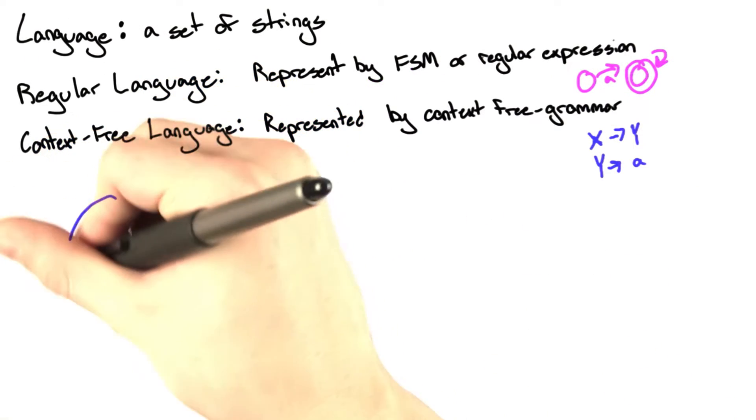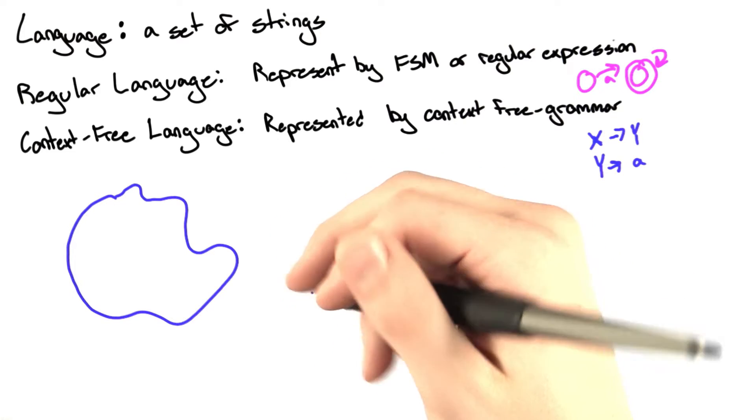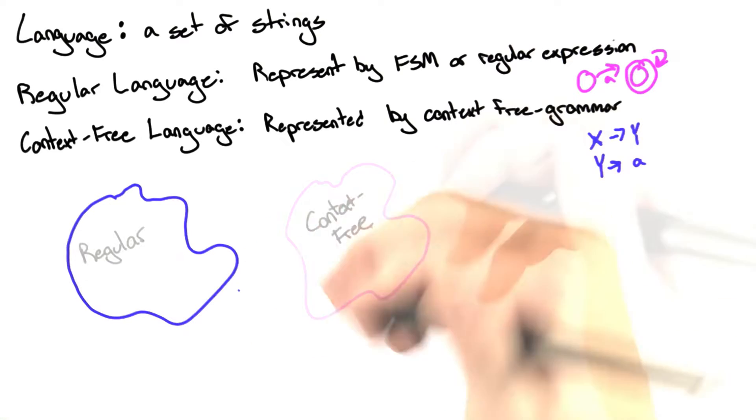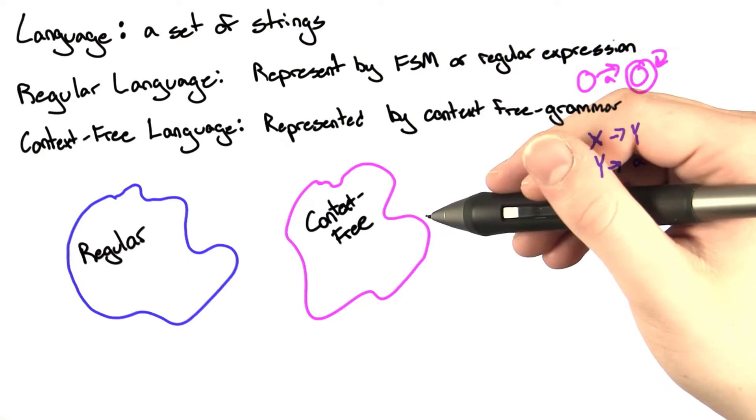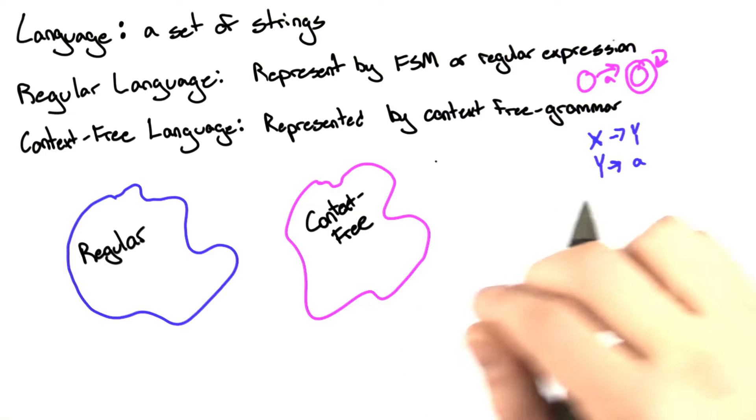So let's say this bubble represents the set of regular languages. It's a set of sets of strings. And let's say this blob is the set of context-free languages. What we want to determine is how we can connect these two.